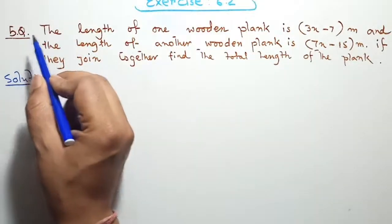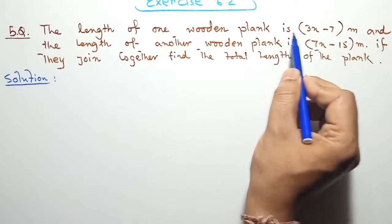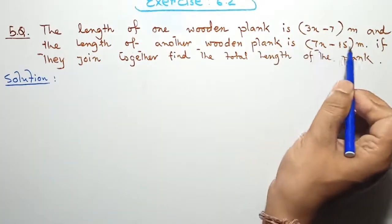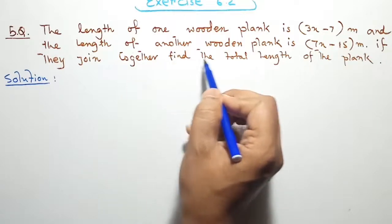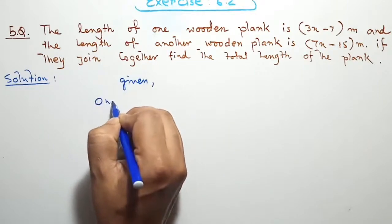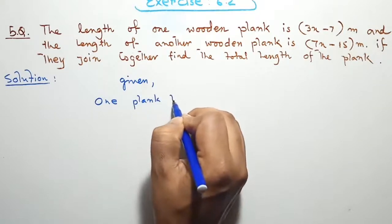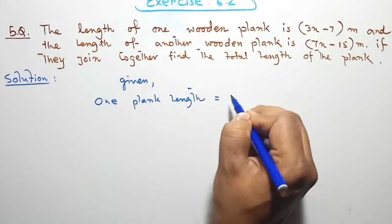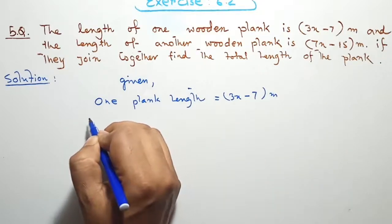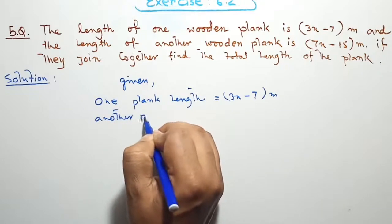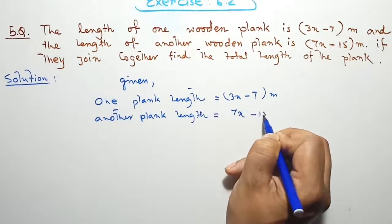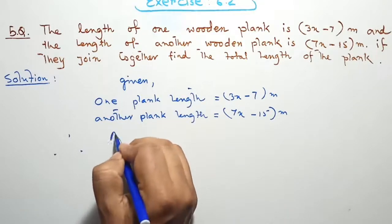Exercise 6.2, Question 5. The length of one wooden plank is 3x minus 7 meters and the length of another wooden plank is 7x minus 15 meters. If they are joined together, find the total length of the plank. Given: one plank length equals 3x minus 7 meters, and another plank length equals 7x minus 15 meters. Therefore, according to the question: